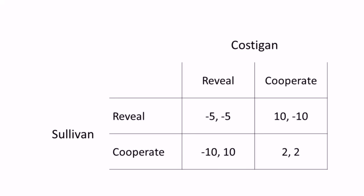They stand to gain more by revealing if the other player does not. Let's take Costigan for example. He can either reveal Sullivan's identity and get a payoff of negative 5 or 10, or cooperate with Sullivan and get a payoff of either negative 10 or 2. However, all these actions are dependent on what Sullivan decides to do.